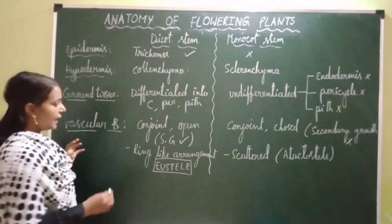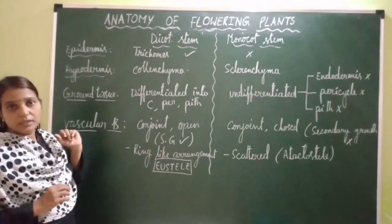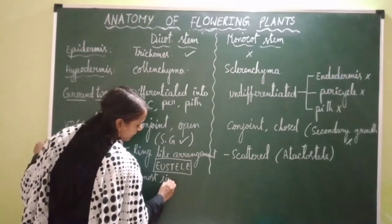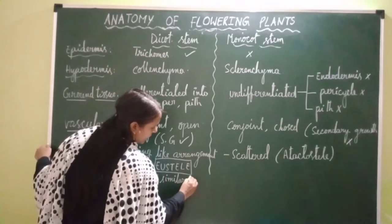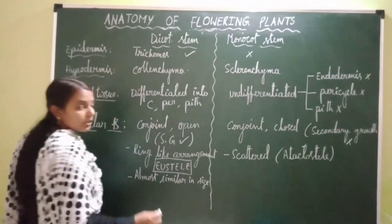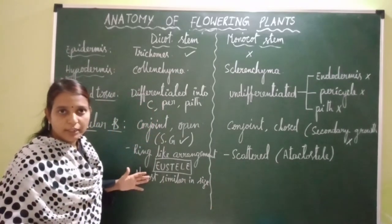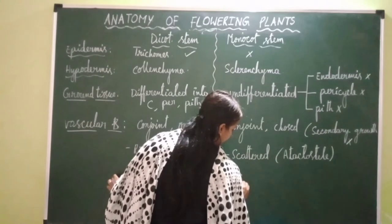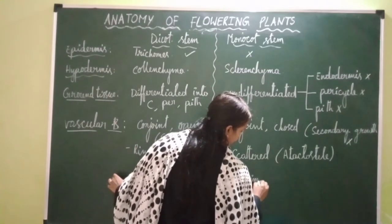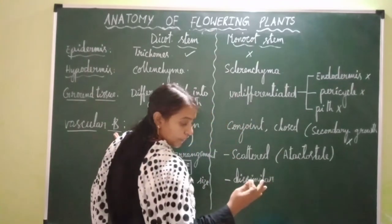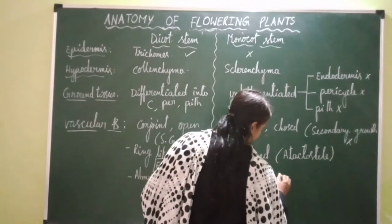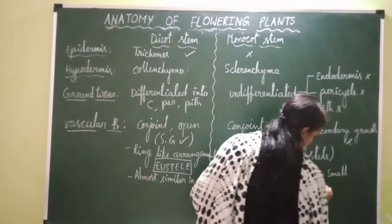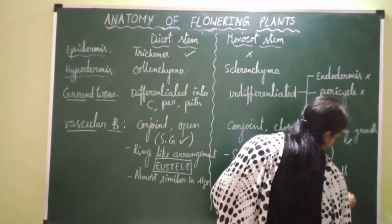All vascular bundles present in dicot stem are almost similar in size. Whereas in case of monocot stem, they are dissimilar in size — vascular bundles present towards the periphery are smaller in size, while those present towards the center are larger in size.